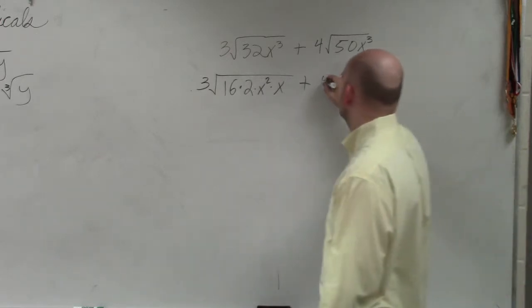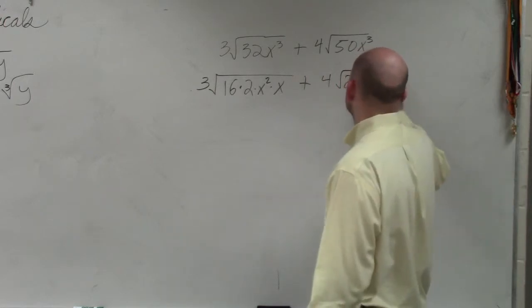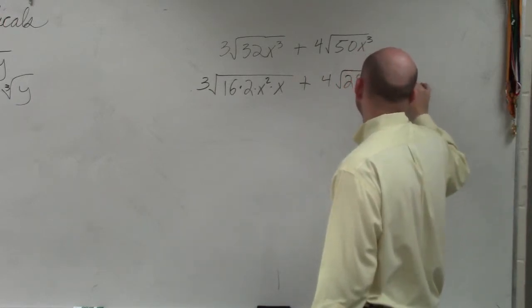Then we do the same with this. 4 times the square root of 50, well that could be 25 times 2 times x squared times x.